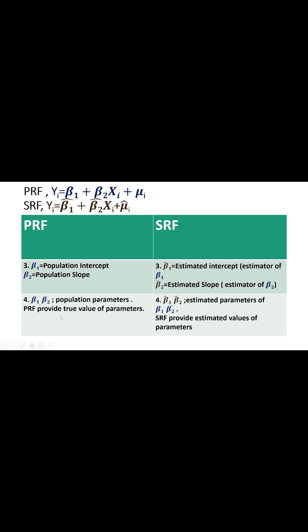The population regression function provides two parameter values: β1 and β2. β1-hat and β2-hat are the estimated parameters of β1 and β2. The sample regression function provides estimated values of the parameters.